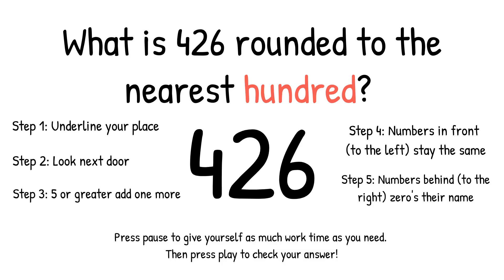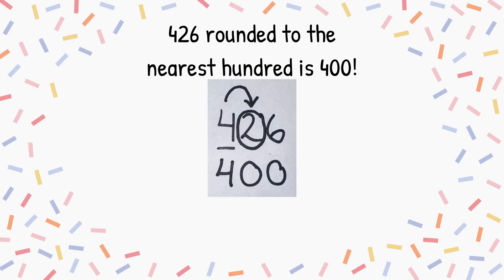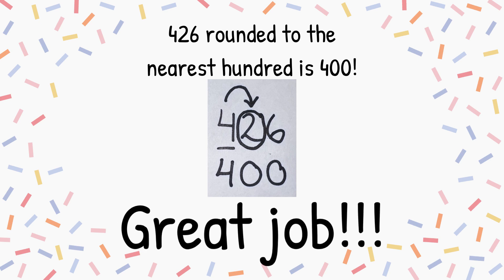What is 426 rounded to the nearest hundred? Press pause to give yourself as much work time as you need, then press play to check your answer. 426 rounded to the nearest hundred is 400. Great job!